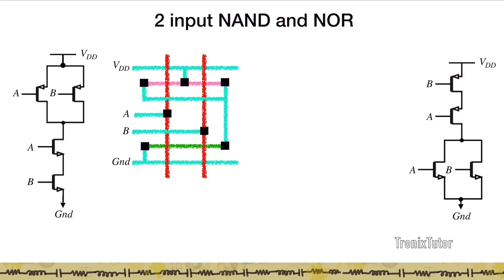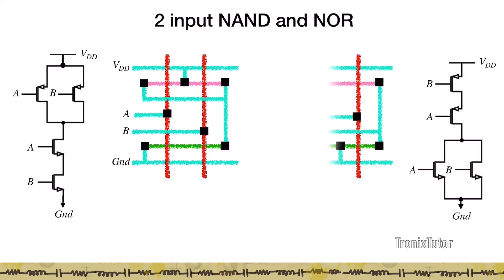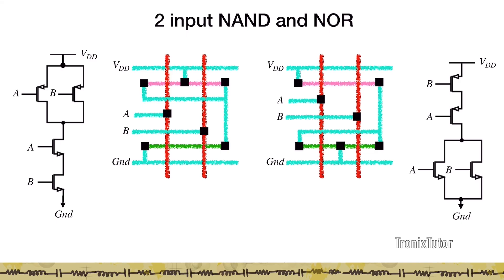The NOR gate looks like a flip of the NAND because the NOR gate has a PMOS stack and NMOS connected in parallel. It essentially has a continuous p-diff shared between the two poly lines, with the n-diff having a common node connected to ground and the two drains shorted and connected to the drain of the PMOS transistor.